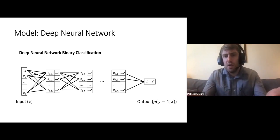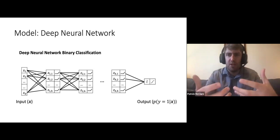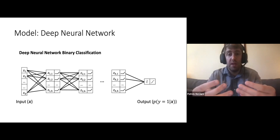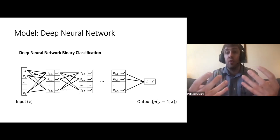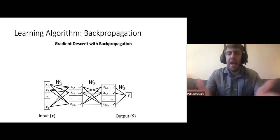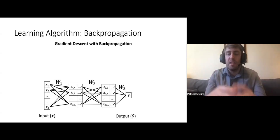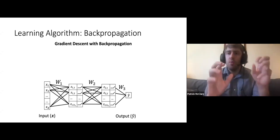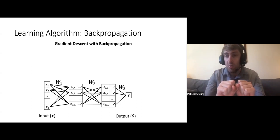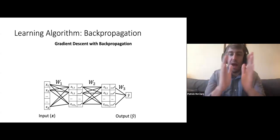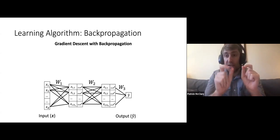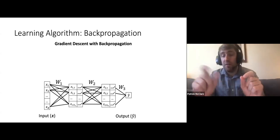Since deep neural networks make the same types of predictions as shallow networks and linear models, we can use the same objective functions. To illustrate backpropagation for deep networks, consider a two-layer neural network with three groups of parameters: group one goes from inputs to the first hidden layer; group two goes from first hidden layer activations to the second hidden layer; and group three goes from second hidden layer activations to the regression prediction.